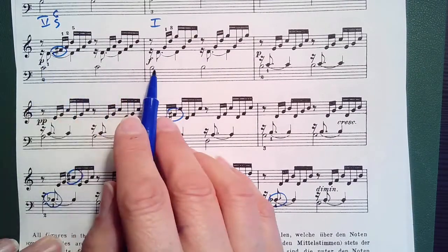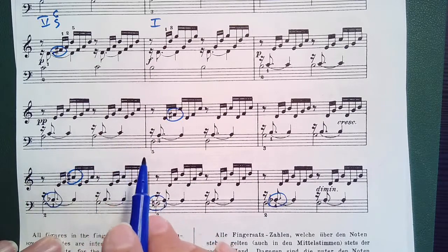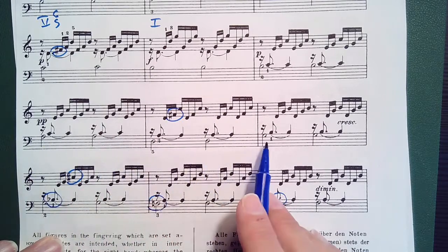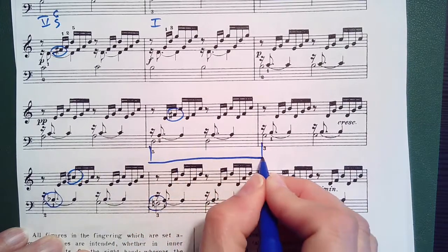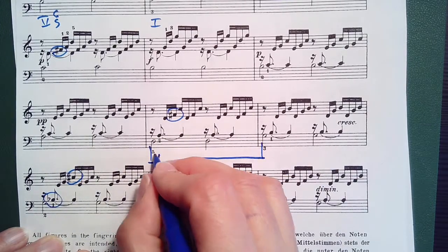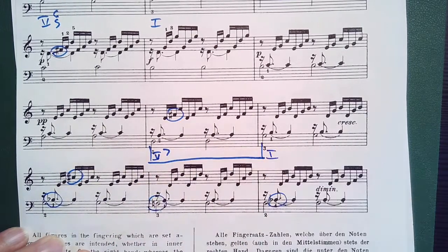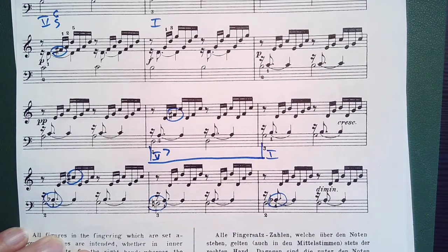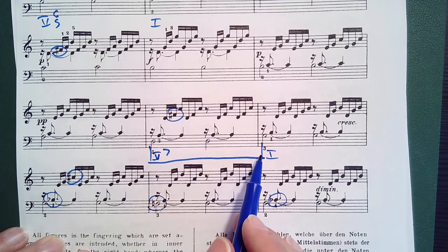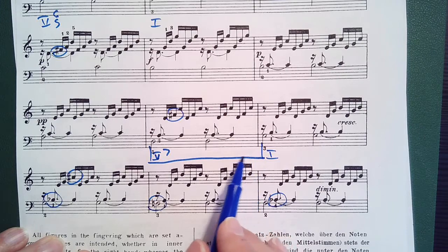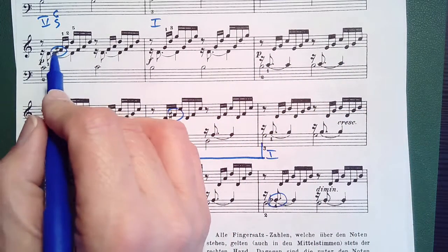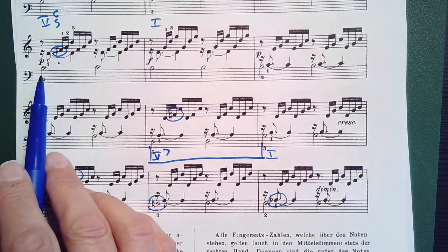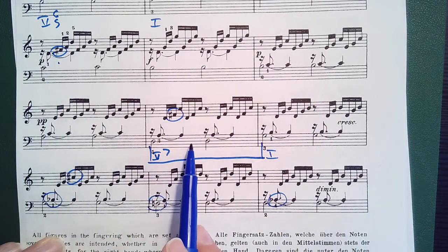And then the F sharp enters here and we follow the baseline C, B, A, and it leaps down D, G. This looks to be like a five one in the key of G. And if that's the case, we want to look backwards to the point where the F sharp first enters. Can all of this here be analyzed in the key of G?